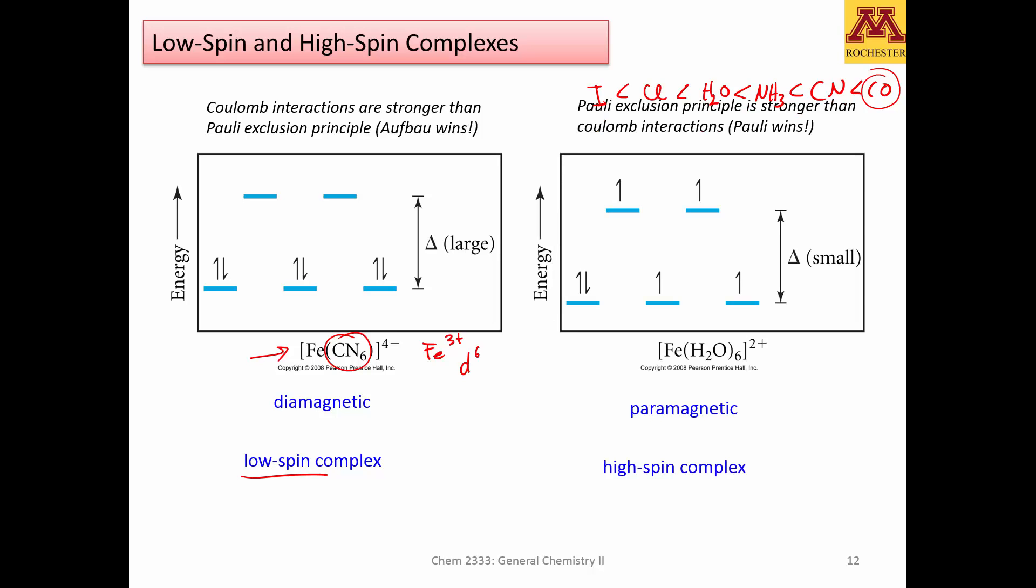In this case, it makes sense that this complex, iron hexacyanide, is diamagnetic. It's also called low spin complex because it has no unpaired electrons. However, if instead of cyanide you choose water, the gap between these two sets of d orbitals is smaller, and therefore the price that the electrons need to pay to be up here is smaller, and we can say that Pauli, and actually Hund's rule, wins.